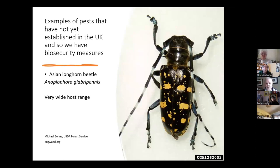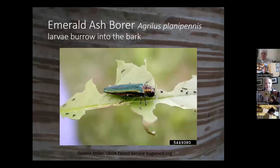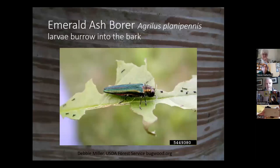The emerald ash borer can penetrate bark — the larvae hatch from eggs laid on the bark and then burrow into it. These have added to ash dieback in the United States and are absolutely devastating ash populations. Again they come from Asia, but we don't have them and are desperate to keep them out.